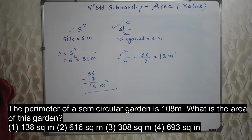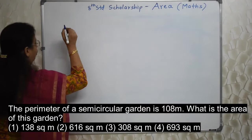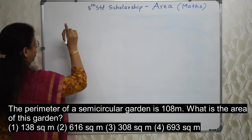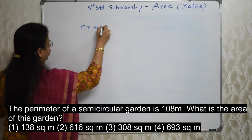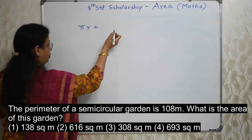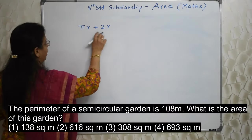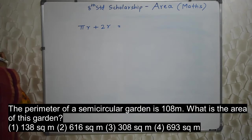The perimeter of a semicircular garden is 108 meter. What is the area of this garden? Perimeter of a semicircular garden is given. So we must find out the formula. Write down the formula of a perimeter of a semicircular garden, that is pi r plus D, that is diameter or 2r. This is the perimeter which is given as 108.